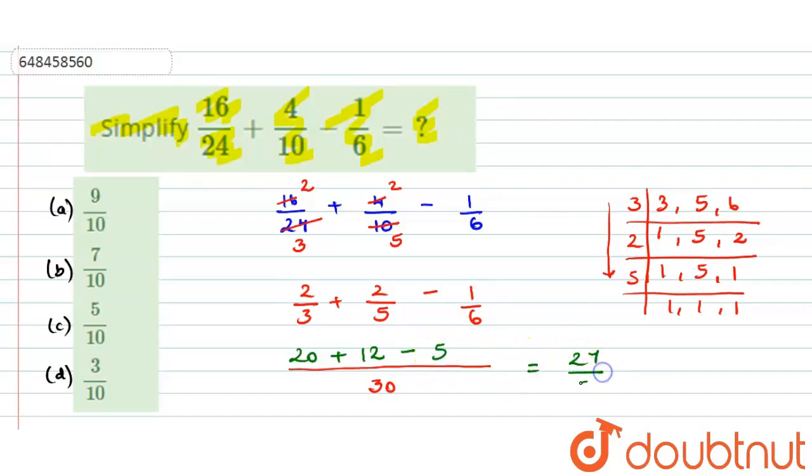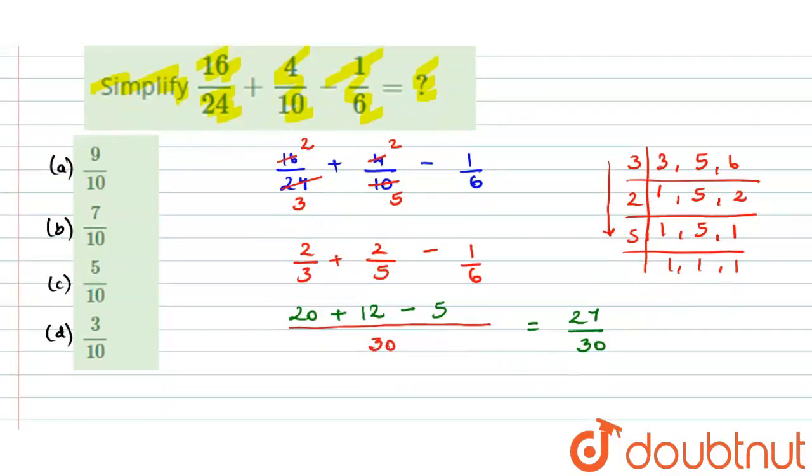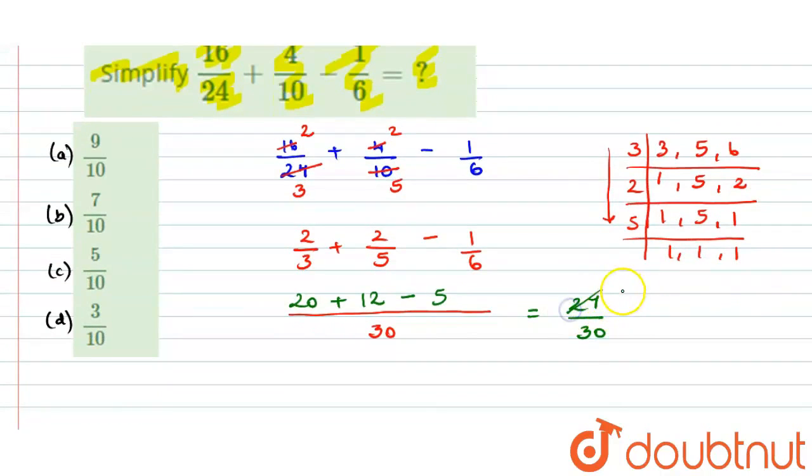Solving this we get 27 by 30. Further, we can divide these 2 numbers by 3. 3 times 9 is 27, 3 times 10 is 30. So the final answer will be 9 by 10. And from the given options, option A will be the correct option. Thank you.